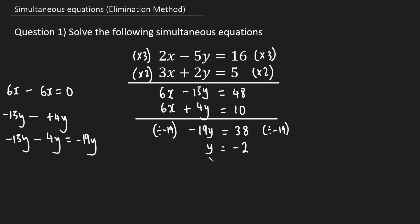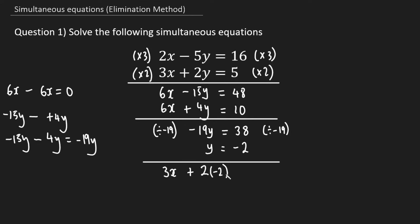Step four is to find x. You go back to the original equations and choose one — it doesn't make a difference which one. I'm going to choose the second one since it has a plus and I prefer to deal with that. I'll write down the second original equation — we don't need the times 2s anymore. It's 3x plus 2 times y, and instead of writing y I'm going to write down the value we found: negative 2. So it's 3x plus 2 times negative 2, and this equals 5.